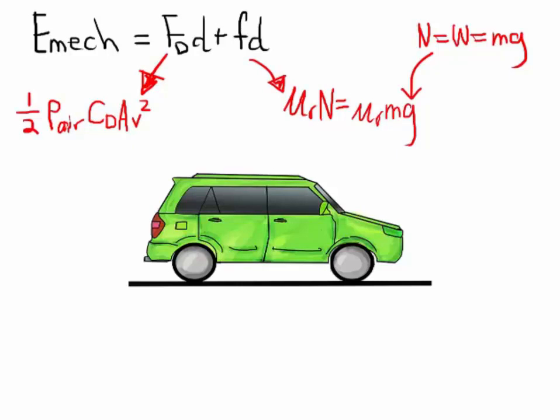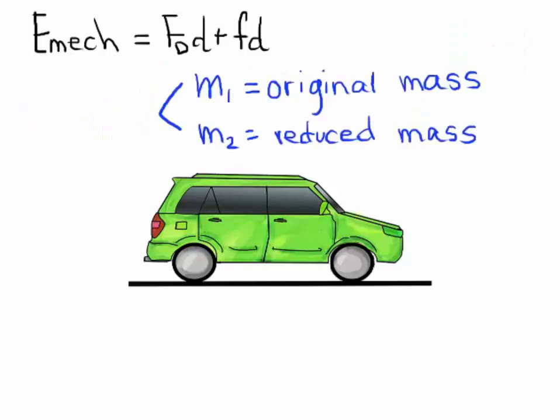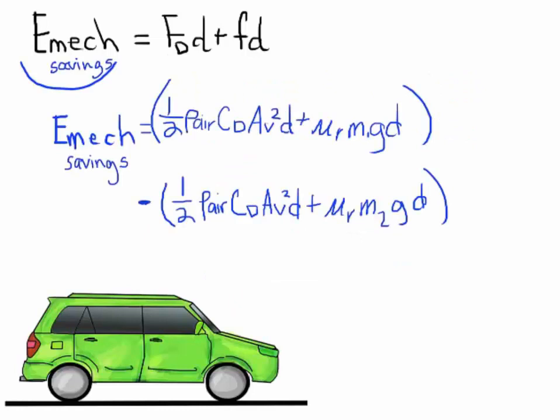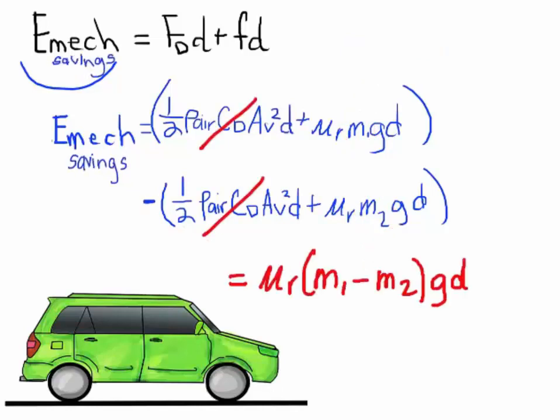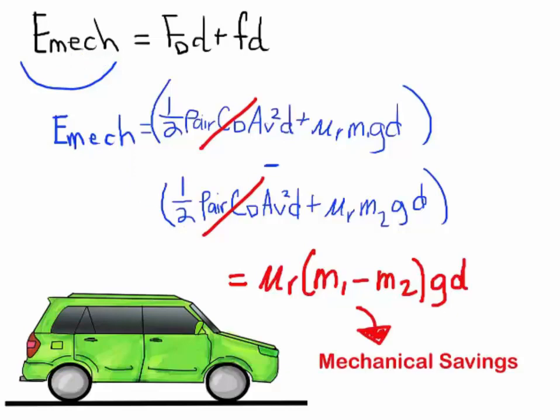We'll also be considering the original mass of the car and the reduced mass. So once we expand the formulas for drag and friction, we have this. We're taking the difference between the two masses as well. If we use numbers instead of symbols, we wouldn't notice that the drag terms cancel out. So we're left with friction, the change in mass, gravity, and the driving distance. These are mechanical savings. So next we're doing the chemical savings.